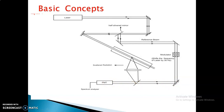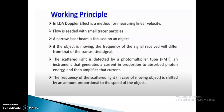Whatever signal comes out from the mirror will be captured through the PMT, which is nothing but the photomultiplier tube. Out of this photomultiplier tube, the signal will be converted into current because inside the PMT we have an electronic circuit along with an amplifier unit. The output of this PMT signal will be analyzed in the spectrum analyzer. This LDA Doppler effect is a method of measuring linear velocity, and the flow is seeded with small tracer particles.